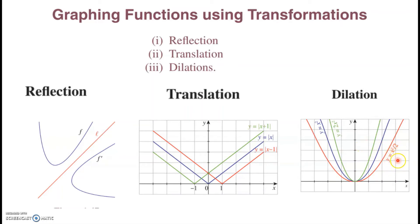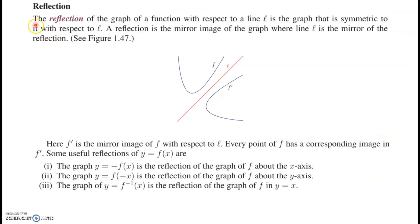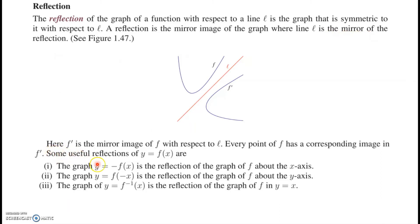A proper definition: the reflection of the graph of a function with respect to line l is the graph that is symmetric to it with respect to l. So l is the line of symmetry, and both images form a reflection with respect to this line. A reflection is a mirror image of the graph where l is the mirror.